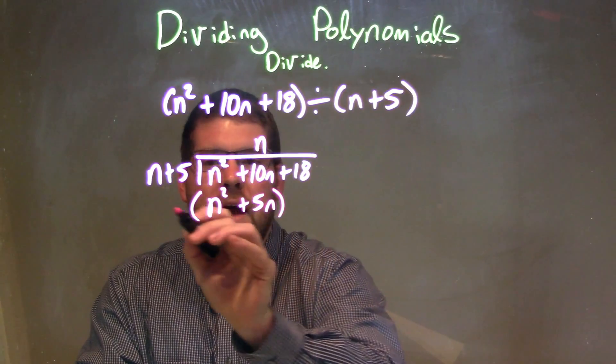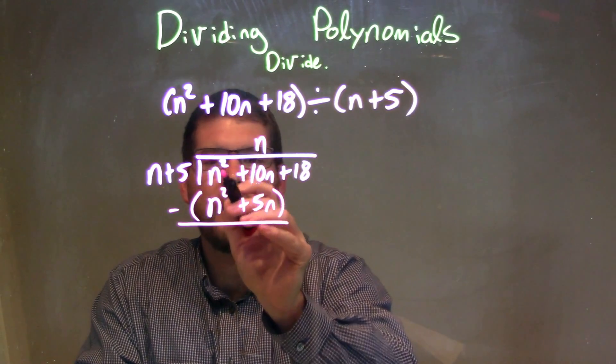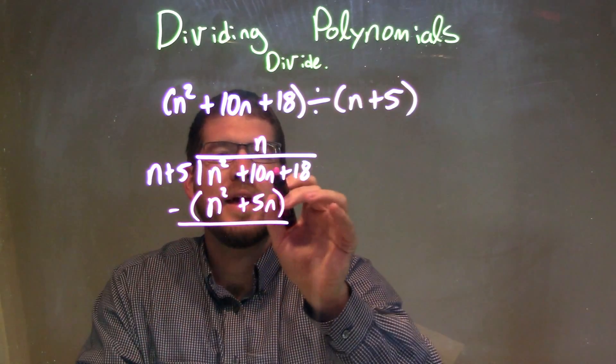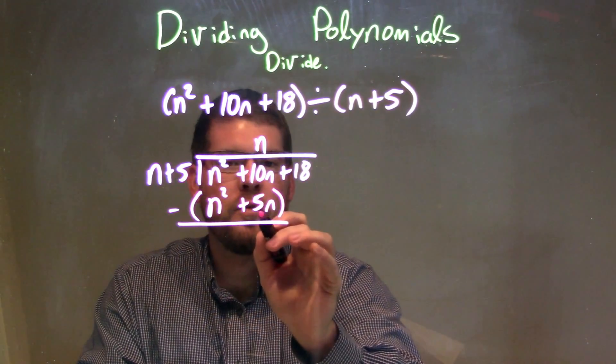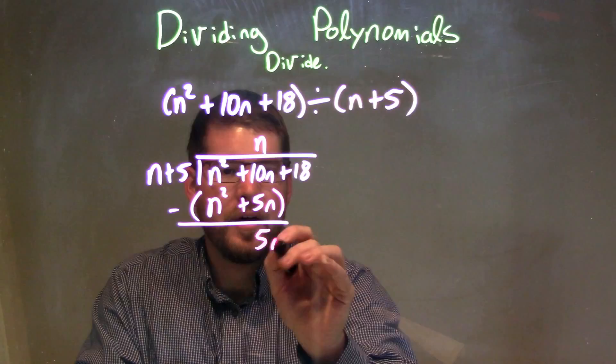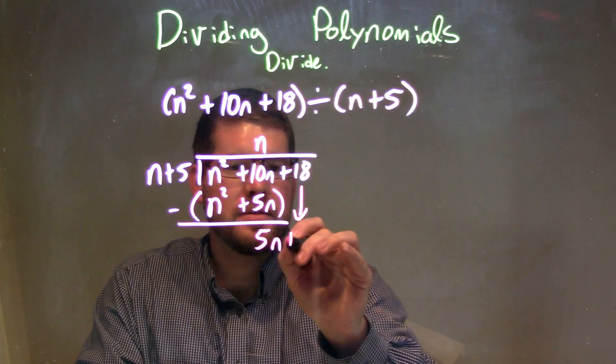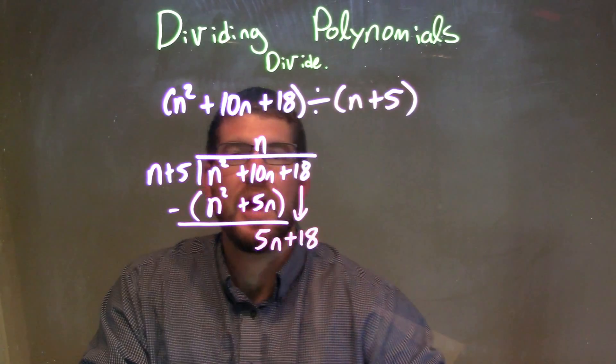We then have to subtract these. n squared minus n squared is just 0. Great. And 10n minus a 5n is just a 5n. Let's bring down the 18. So we bring down the plus 18 and we do this again.